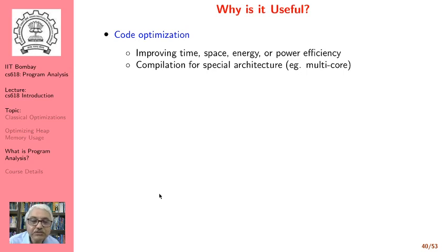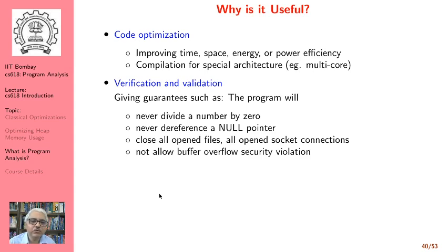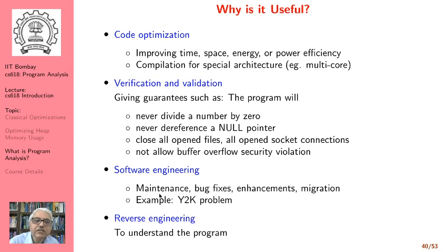This information is useful because we can perform code optimization for improving time, space, energy, or power efficiency. We can use it for compilation for special architectures such as multi-core. We can use the information for verification and validation — for example, guarantees such as the program will never divide by zero, never dereference a null pointer, will close all open files and socket connections, and will not allow buffer overflow security violations.